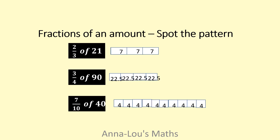Sometimes we've got a numerator of a number greater than one, but we're doing the exact same thing. So on this first one, two-thirds of twenty-one: I'm doing twenty-one divided by three, which gives me seven, and I need two of those, so that gives me fourteen.